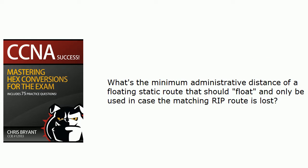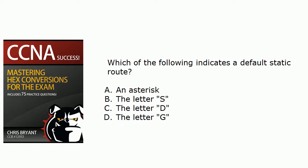What's the minimum administrative distance that you can put on a floating static route that will float and only be used in case the matching RIP route is lost? If floating static routing is new to you or a little fuzzy, make sure to check out that link in the YouTube video description, or search for it on Google or YouTube — I've got plenty of help on that in a live lab.